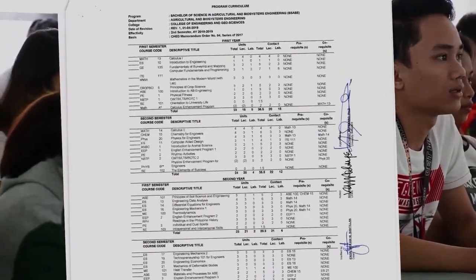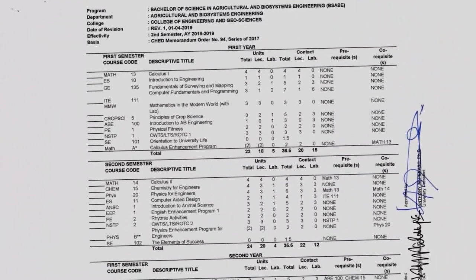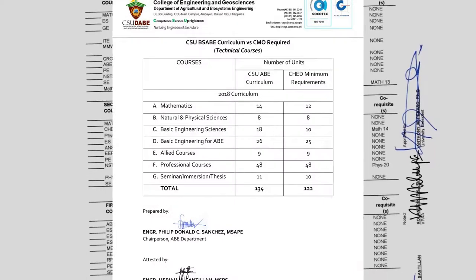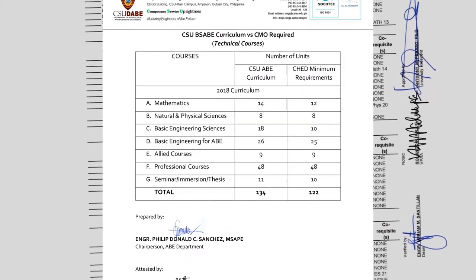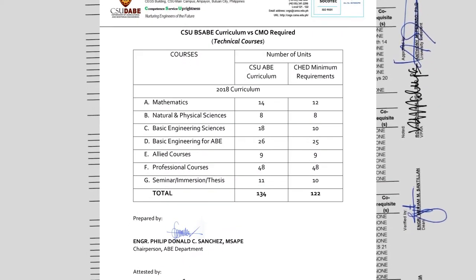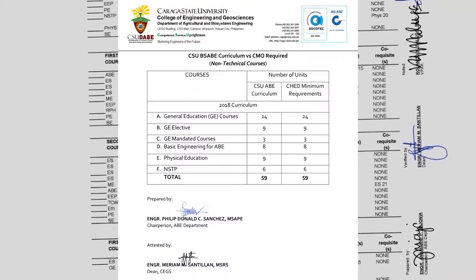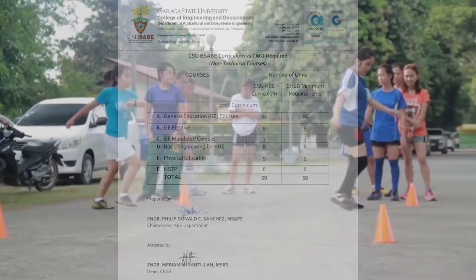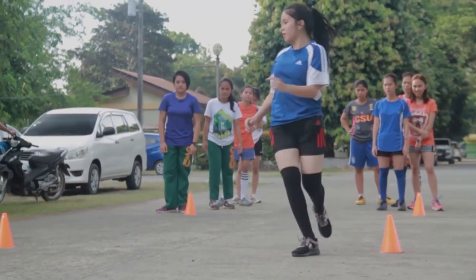The technical category covers those courses involving mathematics, natural sciences, and professional courses, while the non-technical category covers the general education, NSTP, and physical education courses.